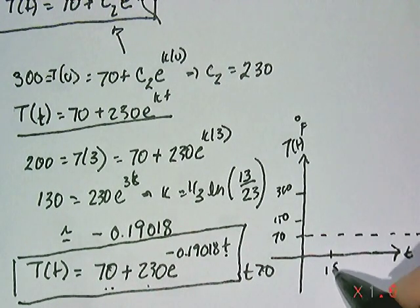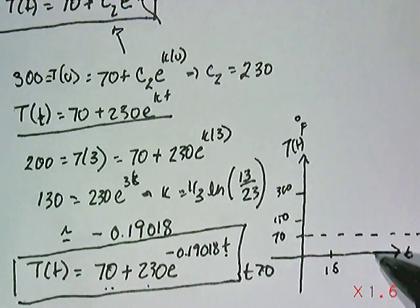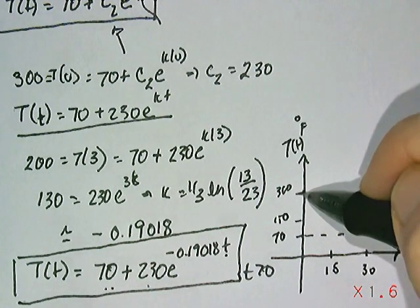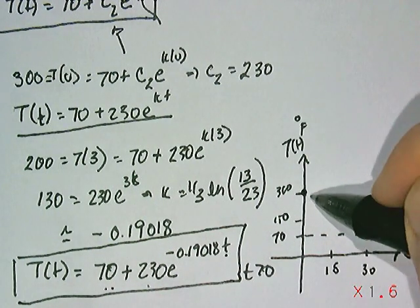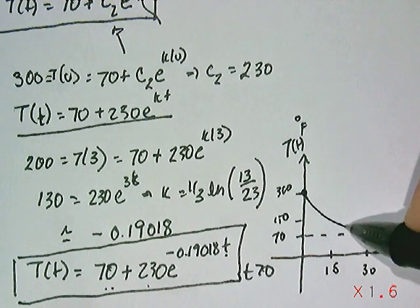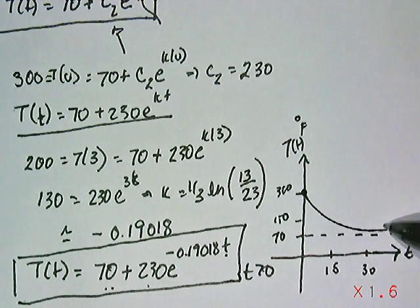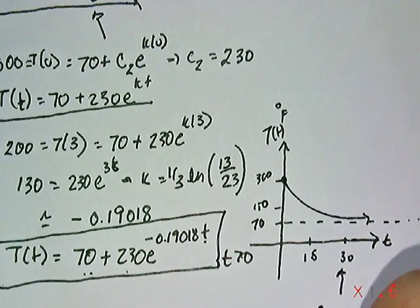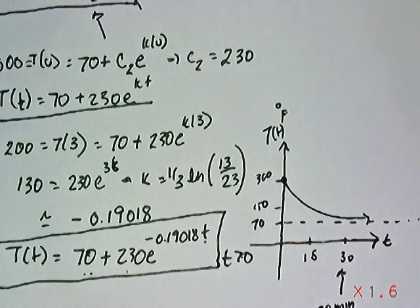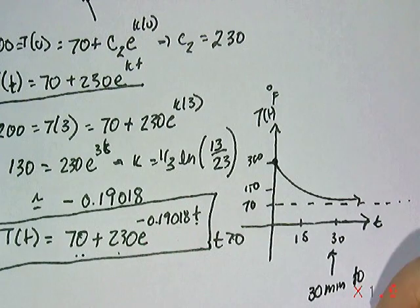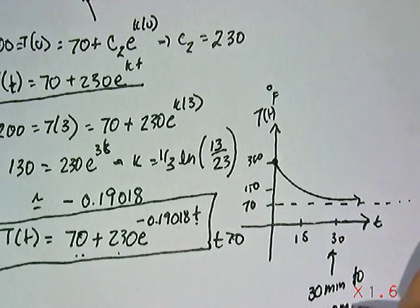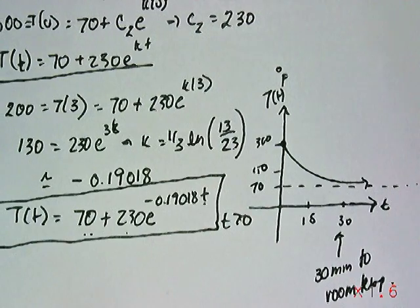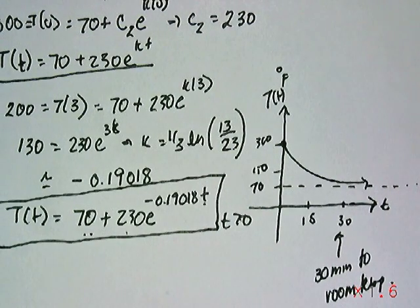Turns out, if you set this equal to 70 and solved for it, you'd see it be about 30 minutes later. So this is initially how the cake is, and exponentially, it kind of goes down like this. And so the answer is about 30 minutes—30 minutes to room temperature. That's a very nice application of Newton's law of cooling and warming.